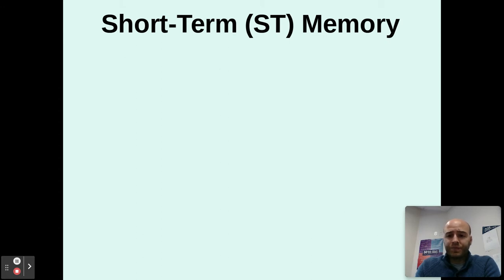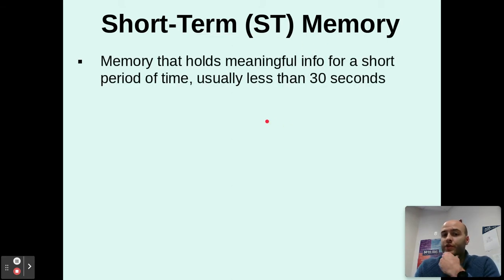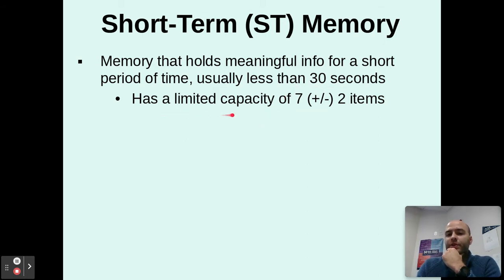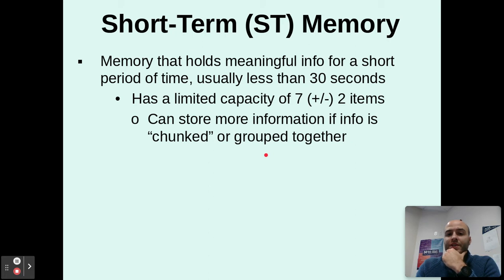As we move along the process from sensory, if it's deemed important, it can be transferred into our short-term memory. Short-term memory holds meaningful info for a short period of time, usually less than 30 seconds, though you could potentially stretch it up to one minute. It has a limited capacity of seven plus or minus two items — so your short-term memory generally holds five to nine things at a time. That's all it can hold.